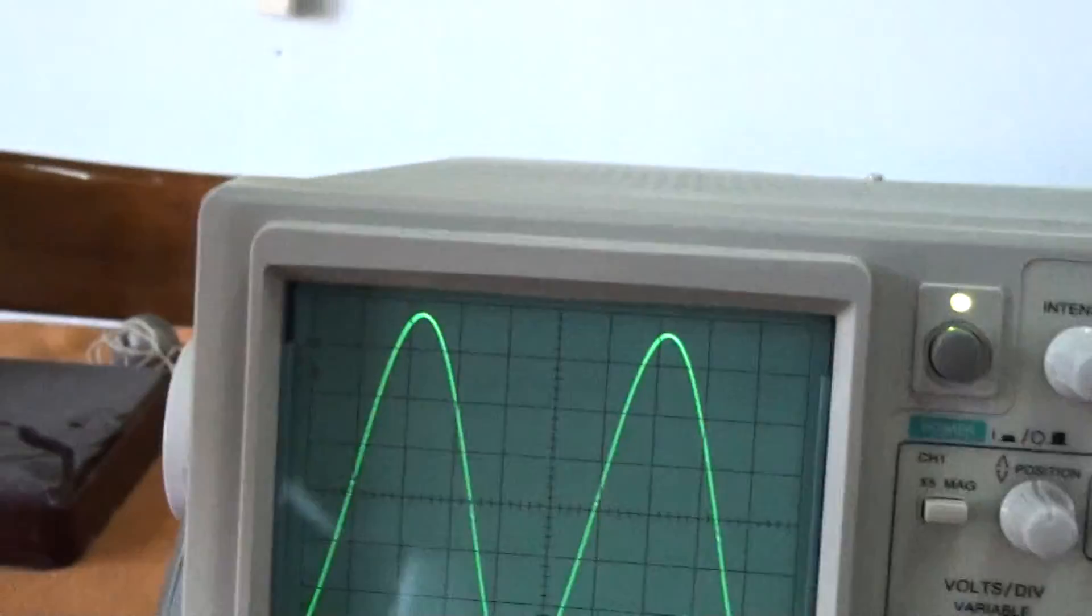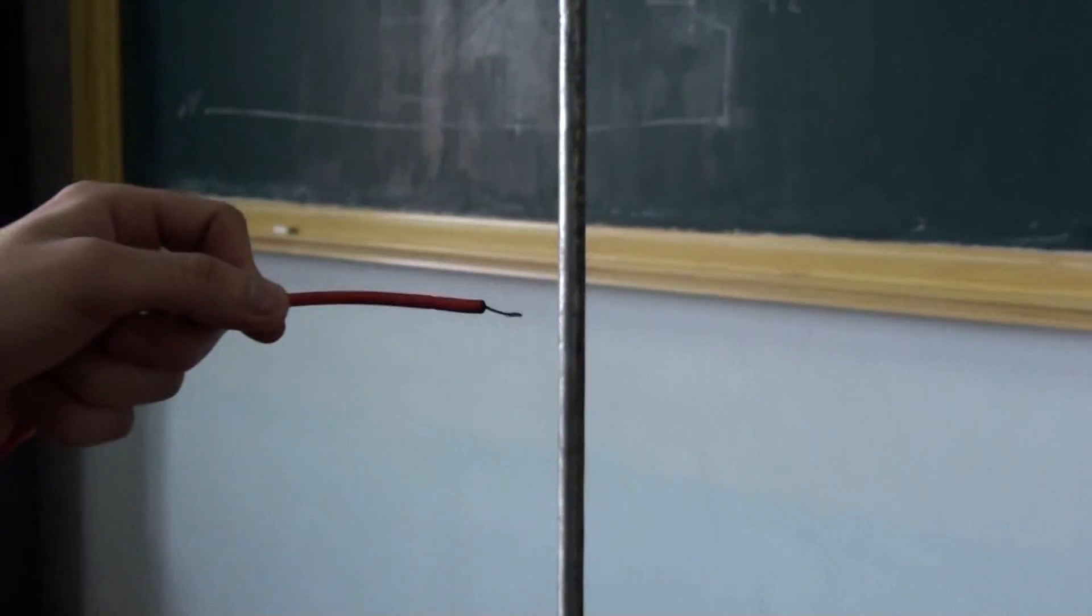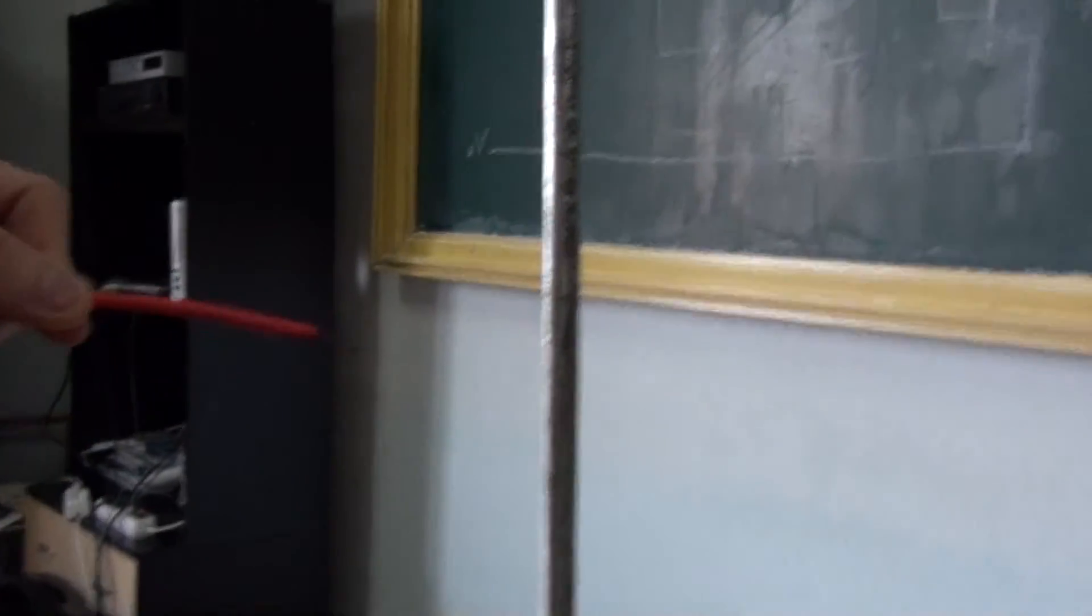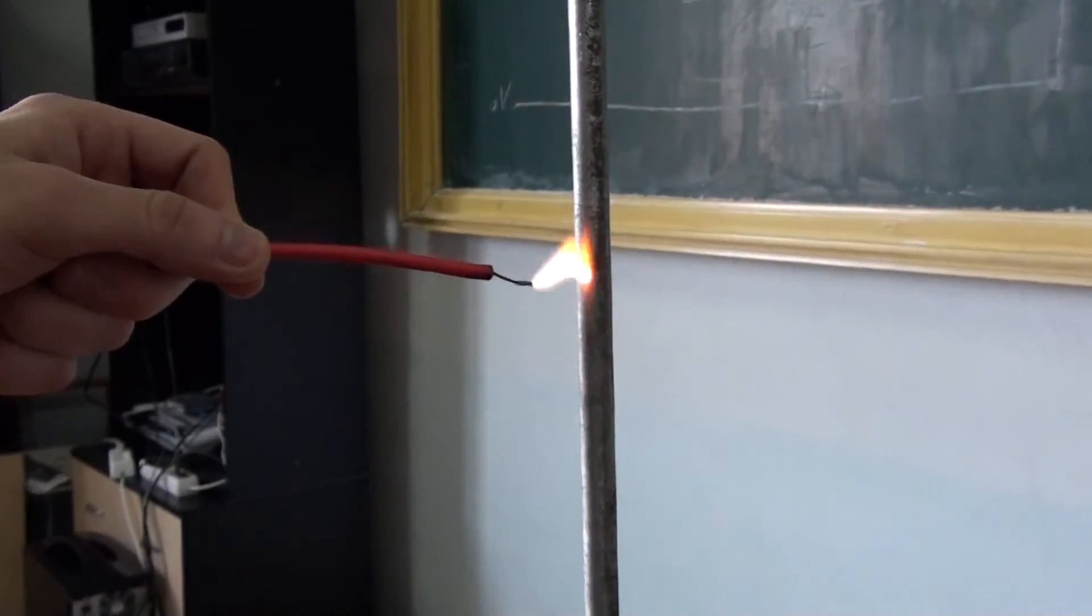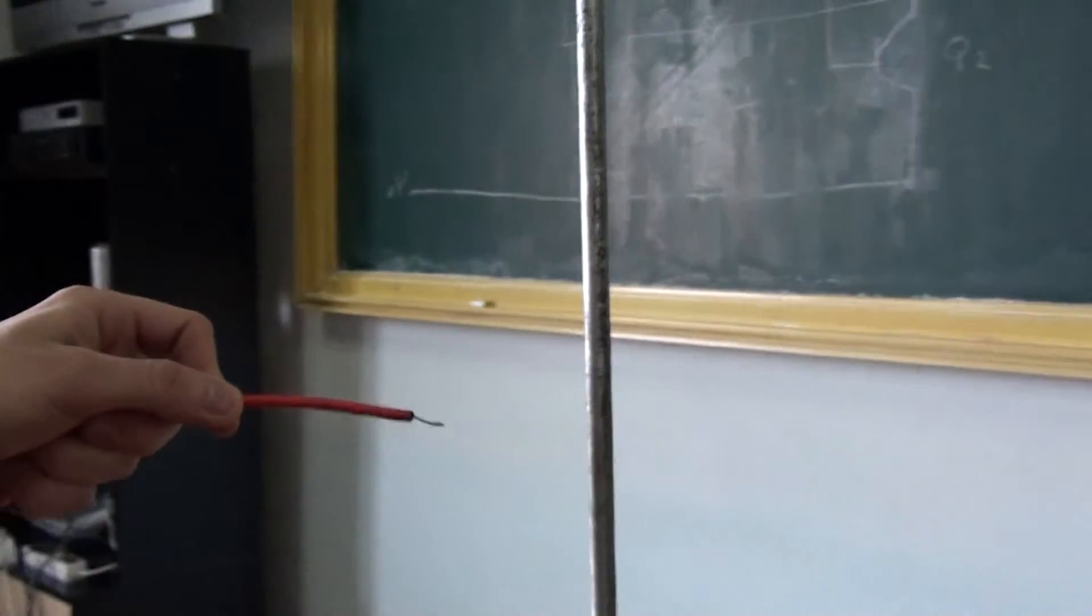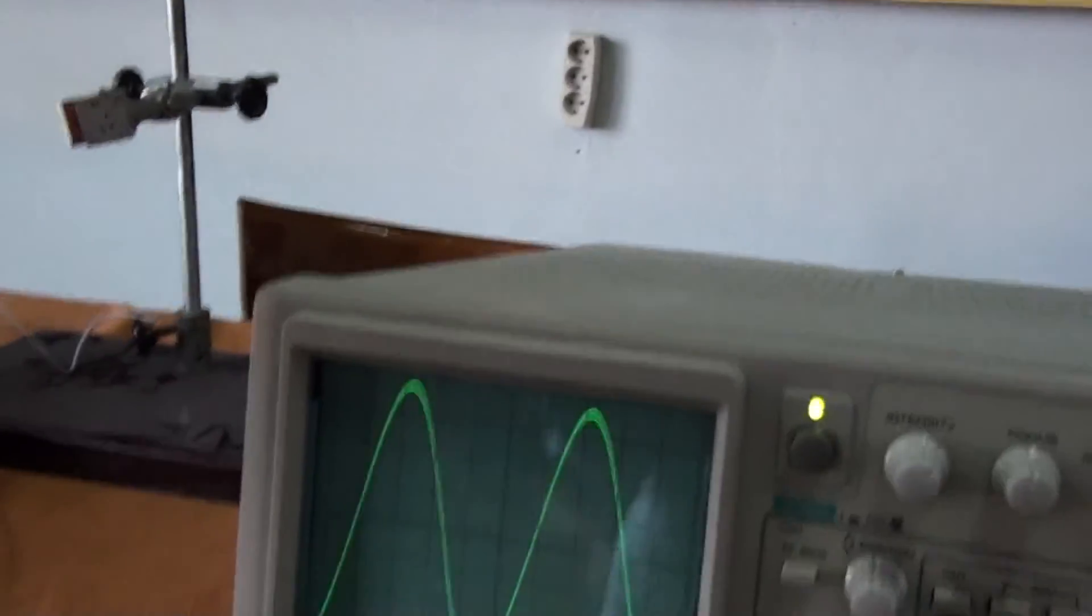Now let's see what happens when high voltages are played with. Arcing starts at about one centimeter, which would indicate around about 10,000 volts.